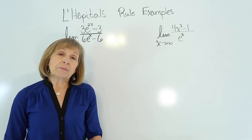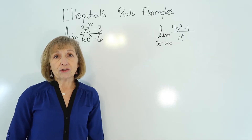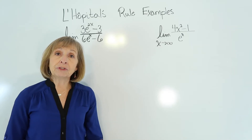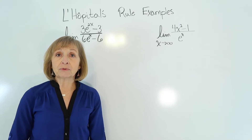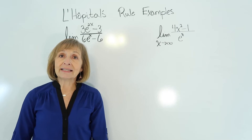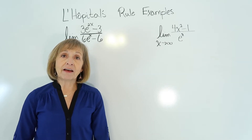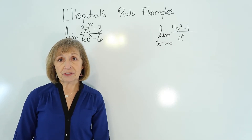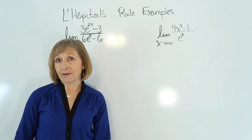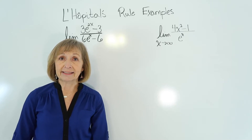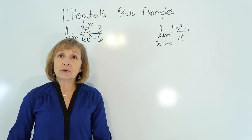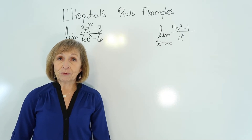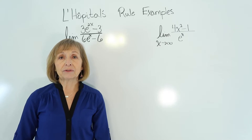So with these you want to remember those processes to try to figure out if you do have an indeterminate form, and then if you do, L'Hopital's Rule says that the limit as x approaches c of f(x) over g(x) is equal to the limit as x approaches c of f'(x) over g'(x), if that limit exists. So we need to check to see if we have that case first, and then go ahead and apply it.